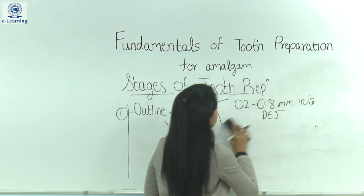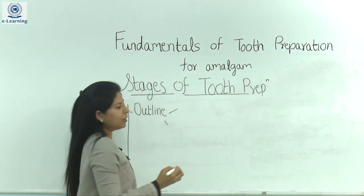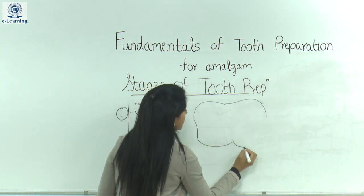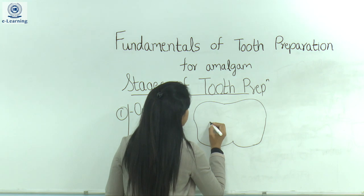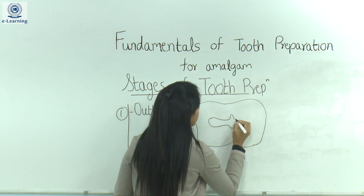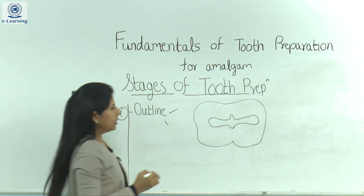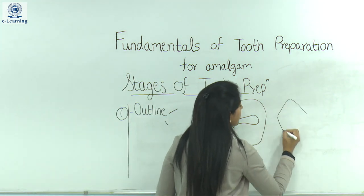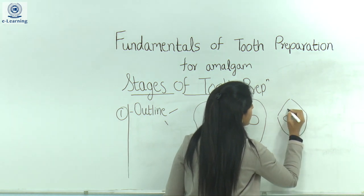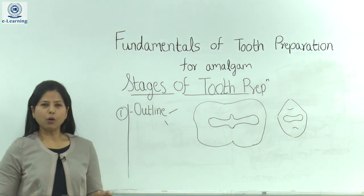Let me explain with diagrams. In the case of a mandibular molar, the outline form will be something like this. This is the outline form for a mandibular molar, and for a premolar the outline form is like this. So we have covered the outline form.